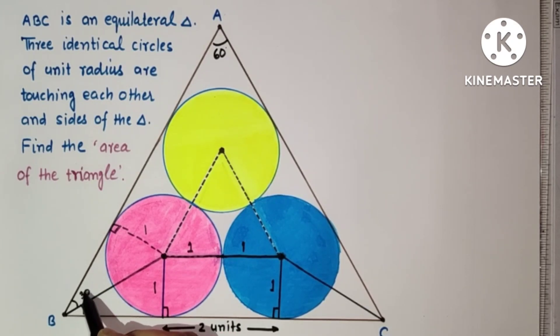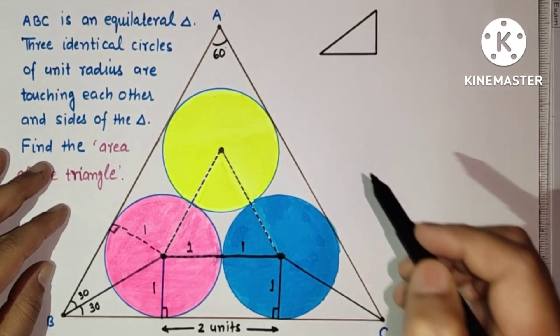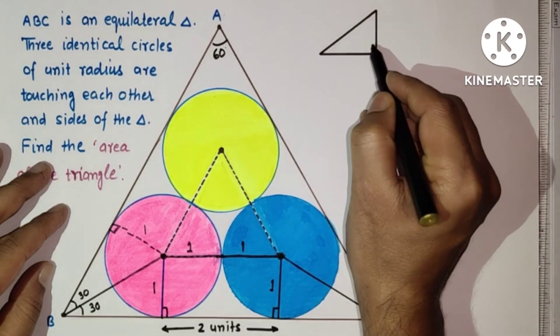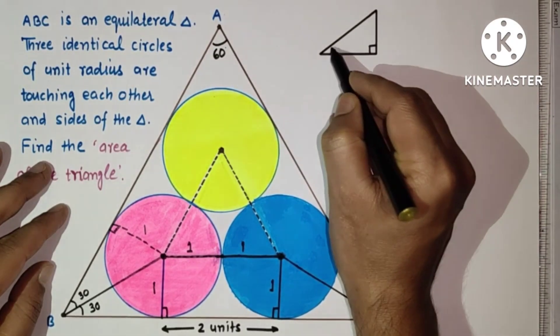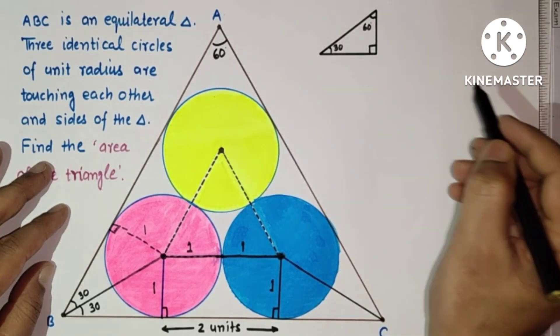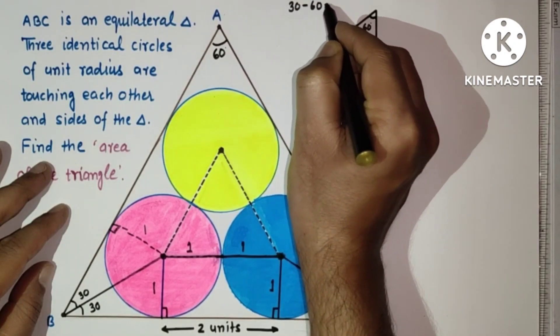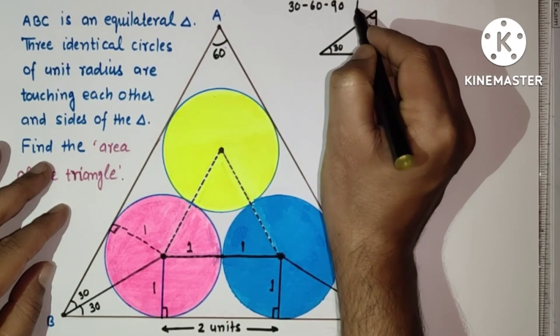Now using 30-60-90 theorem, this is a right angle triangle. This is 30, this is 60. By 30-60-90 theorem, 30-60-90 theorem.